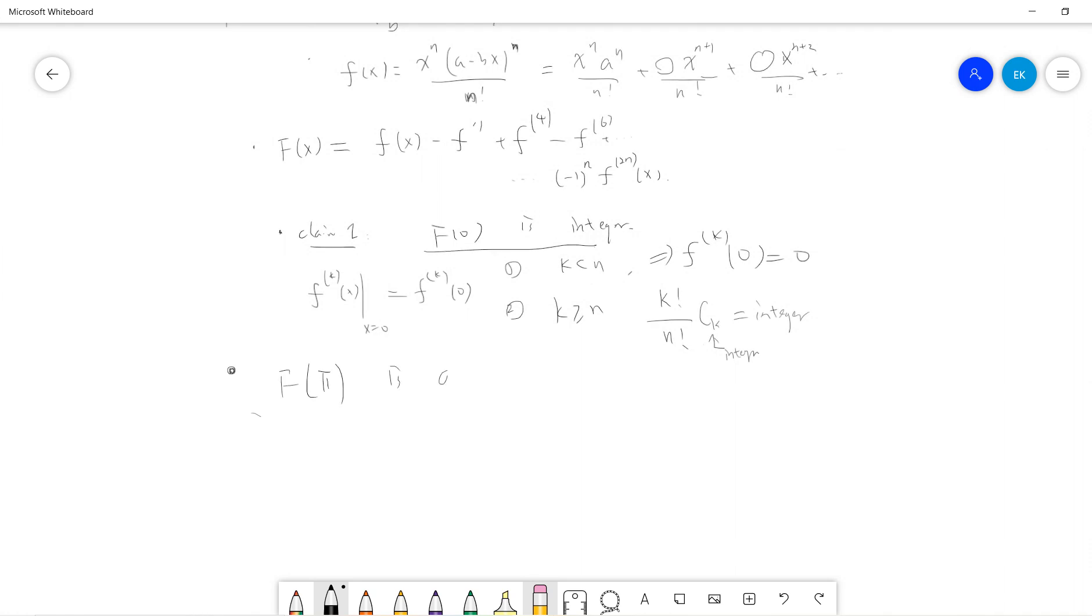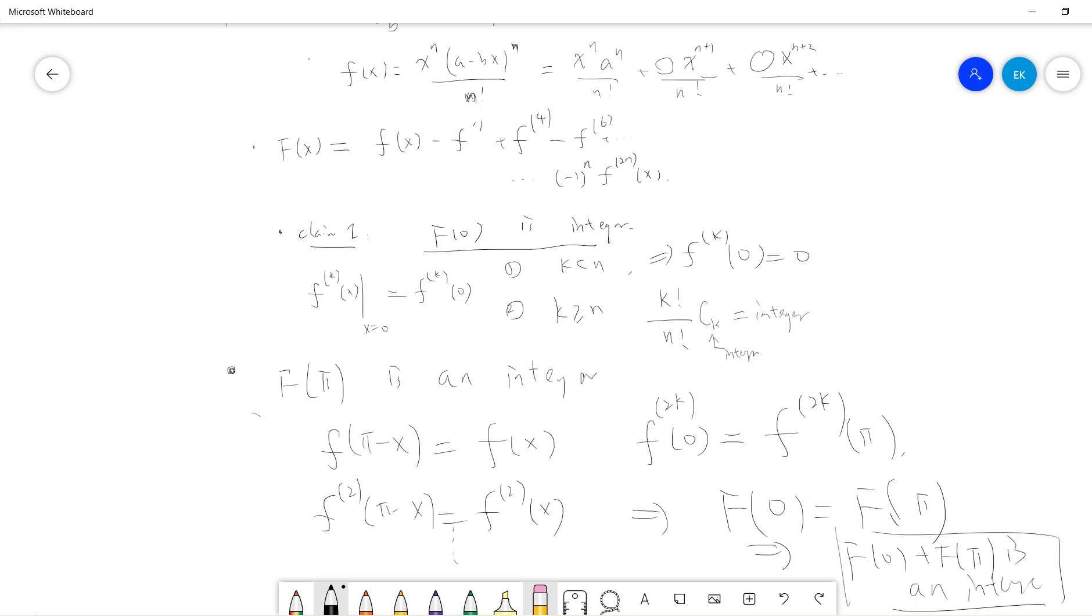Next is F(π) is also an integer. The reason is that lowercase f(π - x) will equal f(x) by definition. This could be verified. If you change π minus x, it tells you that the second derivative of f(π - x) is the second derivative of f(x). So if you put x equals 0, then f^(2k)(0) equals f^(2k)(π). So it tells you that F(0) plus F(π) is an integer.